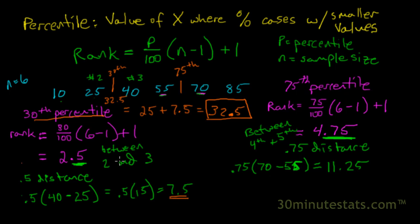Now we know that the 75th percentile is going to be 11.25 units greater than 55. So of the 15 units between 55 and 70, we're going to go up 11.25. To find the 75th percentile, we can start with the 4th observation, 55 plus 11.25, and this is going to give us 66.25.